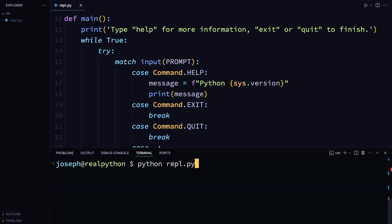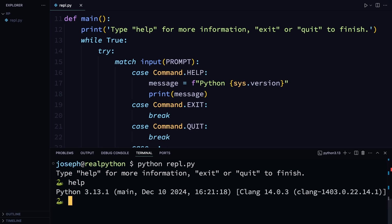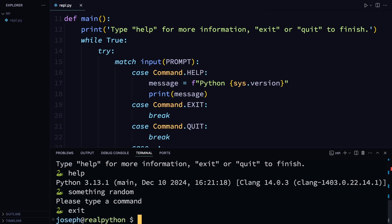Python, repl dot py. Try out some commands. Help, something random, and exit. Help matches command dot help, something random gets caught by the wildcard condition and prints the line, please type a command. And exit matches with command dot exit, just like you planned, breaking the while loop and exiting the function. Okay, you started off with a literal pattern and moved on to implement the value and wildcard patterns. But there's still a lot of work left. For instance, command dot exit and command dot quit both do the same thing, don't they? In the next lesson, you'll learn how this can be improved, among other techniques.